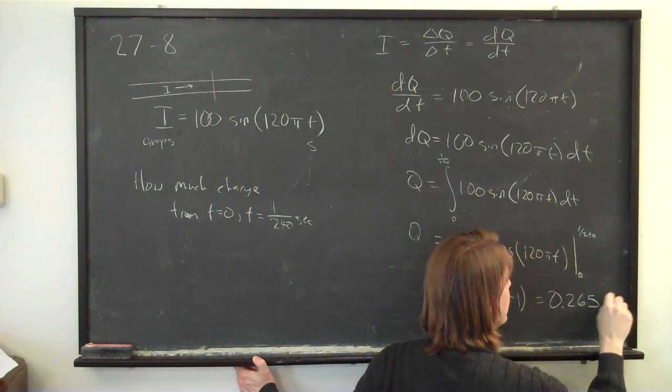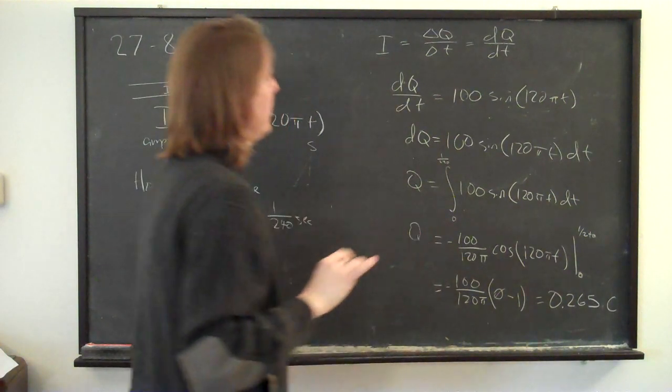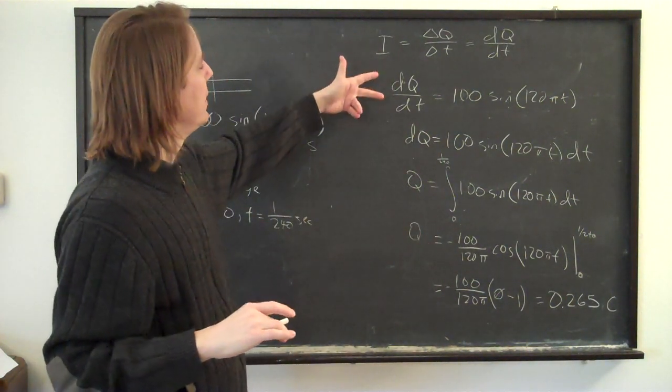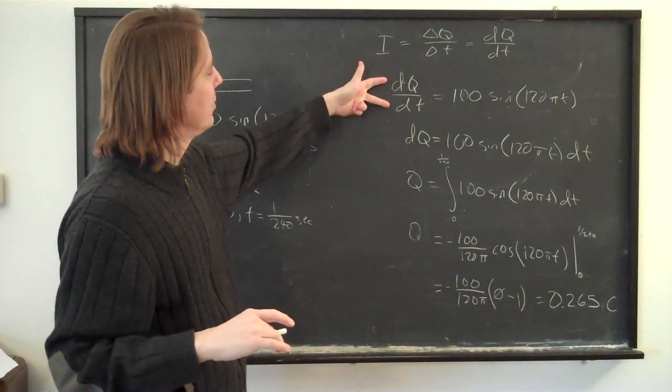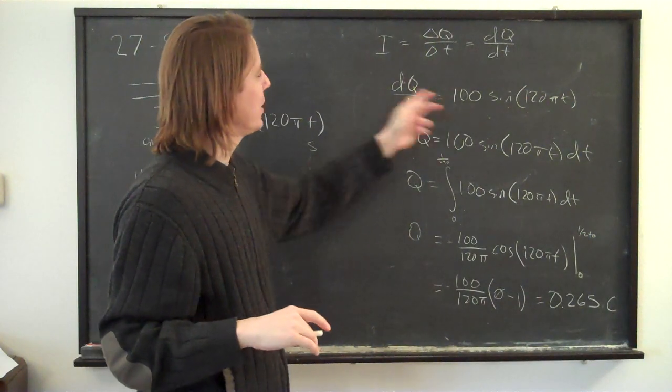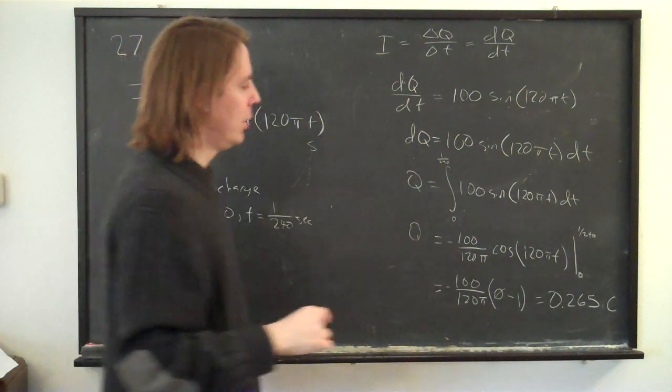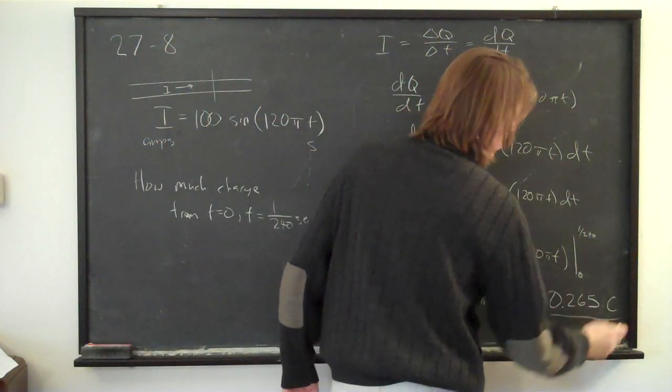And it's in a unit of coulombs. It has to be coulombs because we were doing current in amps. And amps are coulombs per second. So when we took the time over here of seconds, this was just coulombs. Point two six five coulombs.